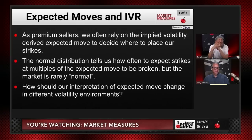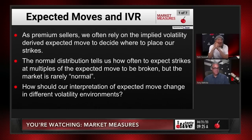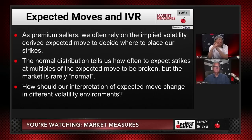The beauty of expected move, which is right about 70% of the time, is it really does help you find the place to set up the strikes. The normal distribution tells us how often to expect strikes at multiples of expected move to be broken, but the market is rarely normal. So how should our interpretation of expected move change in different volatility environments?